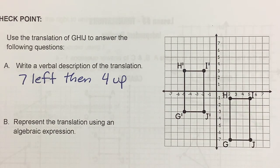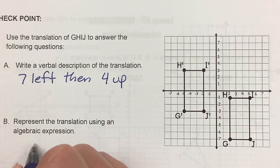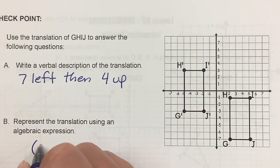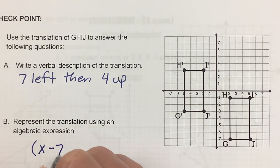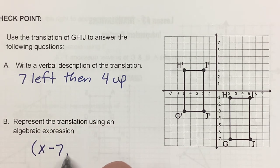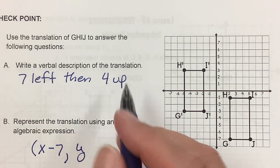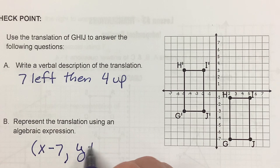Represent it using an algebraic expression: X minus 7, because it's going left, and Y plus 4, because it's going up.